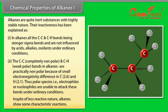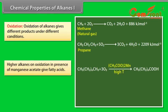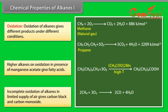In spite of their less reactive nature, alkanes show some characteristic reactions. Oxidation: Oxidation of alkanes gives different products under different conditions. Alkanes heated in the presence of air or dioxygen are completely oxidized to carbon dioxide and water with the evolution of a large amount of heat. Higher alkanes on oxidation in the presence of manganese acetate give fatty acids. Incomplete oxidation of alkanes in limited supply of air gives carbon black and carbon monoxide: 2CH4 + 3O2 → 2CO + 4H2O; CH4 + O2 → C + 2H2O.